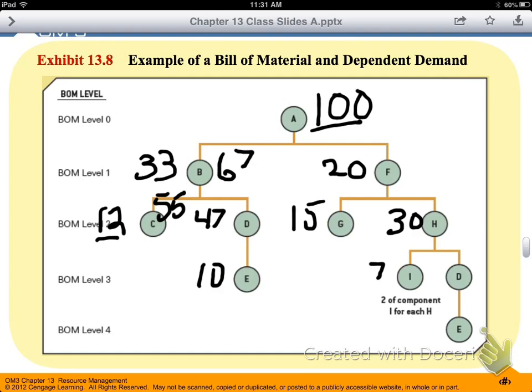Similarly, with item D, we have 47 on hand, we need to get to 67, so we know we need to produce an additional 20 D items. And if we need 20 D items and we've got 10 E items on hand, we need to produce an additional 10 E items.